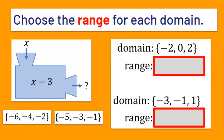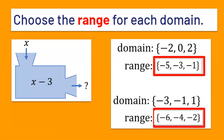Now let's choose a range for each domain. Each element of the domain goes in place of the variable x inside the function machine, and the output gives you your range. Pause the video and try these yourself. The function machine says x minus 3. So negative 2 minus 3 is negative 5; 0 minus 3 is negative 3; 2 minus 3 is negative 1. The range for the first domain is negative 5, negative 3, negative 1. For the second domain of negative 3, negative 1, and 1: negative 3 minus 3 is negative 6; negative 1 minus 3 is negative 4; 1 minus 3 is negative 2. So the second range is negative 6, negative 4, negative 2.